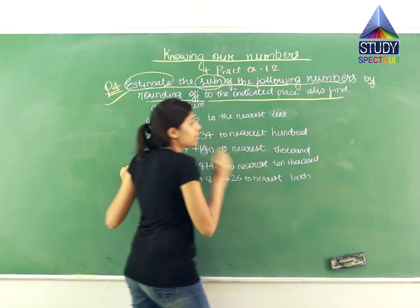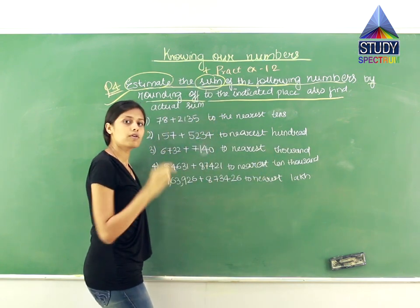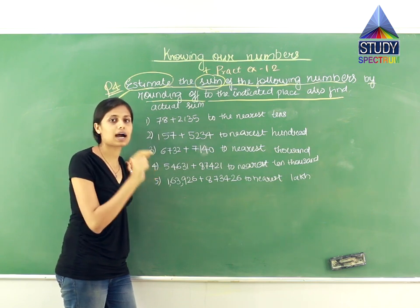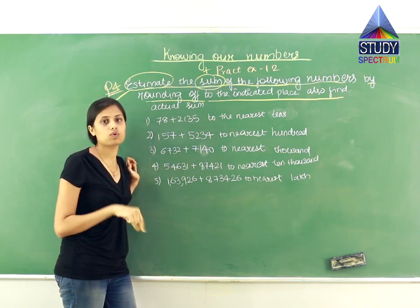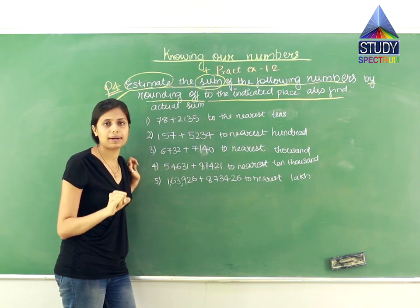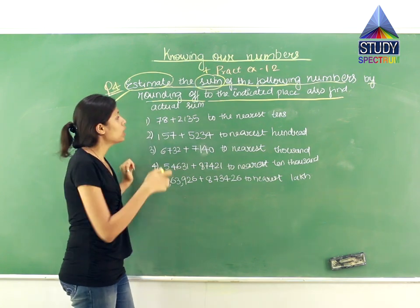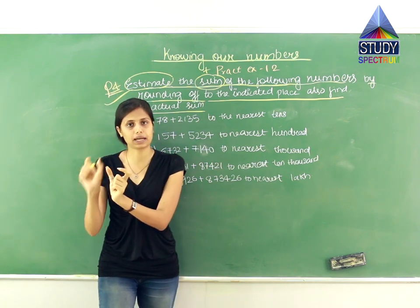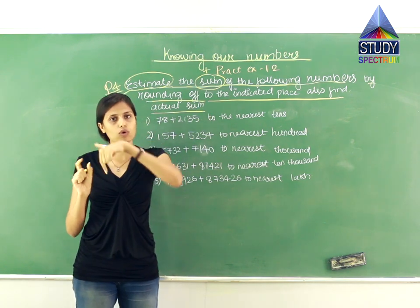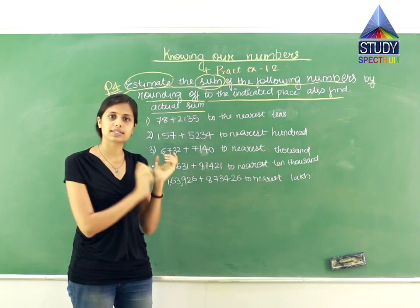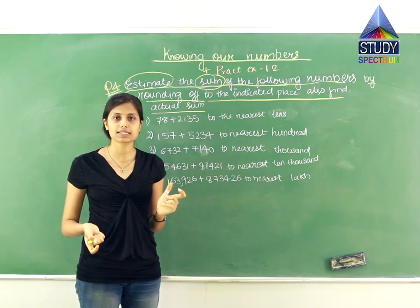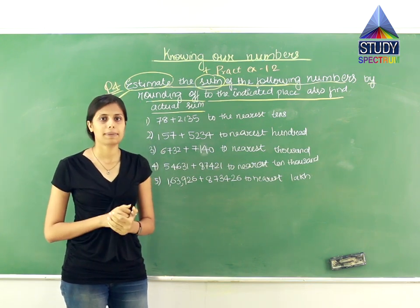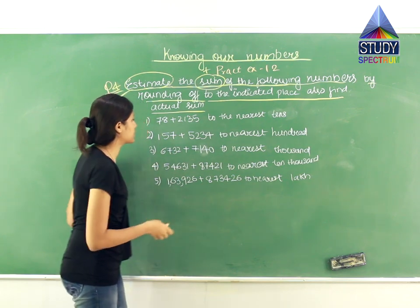To the indicated places — means the question has mentioned which place to round off, like the 10s place. It can be 10s, 1000s, lakhs, 10 lakhs, anything. You have to round off the number to that place, find the estimated sum, and also find the actual sum by adding the original numbers as given.